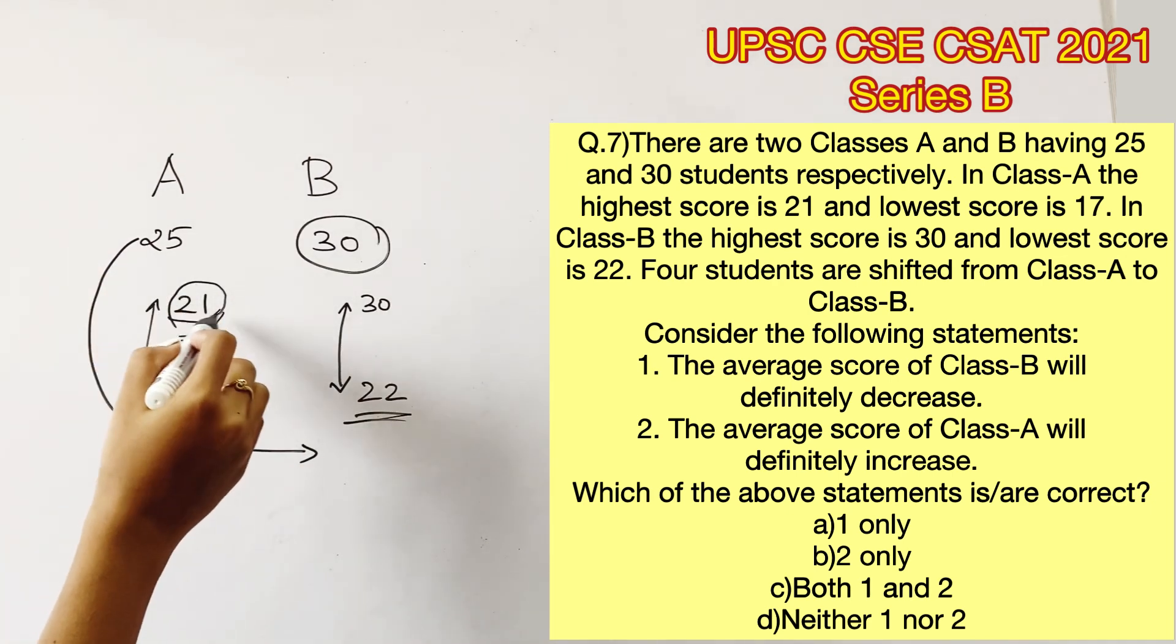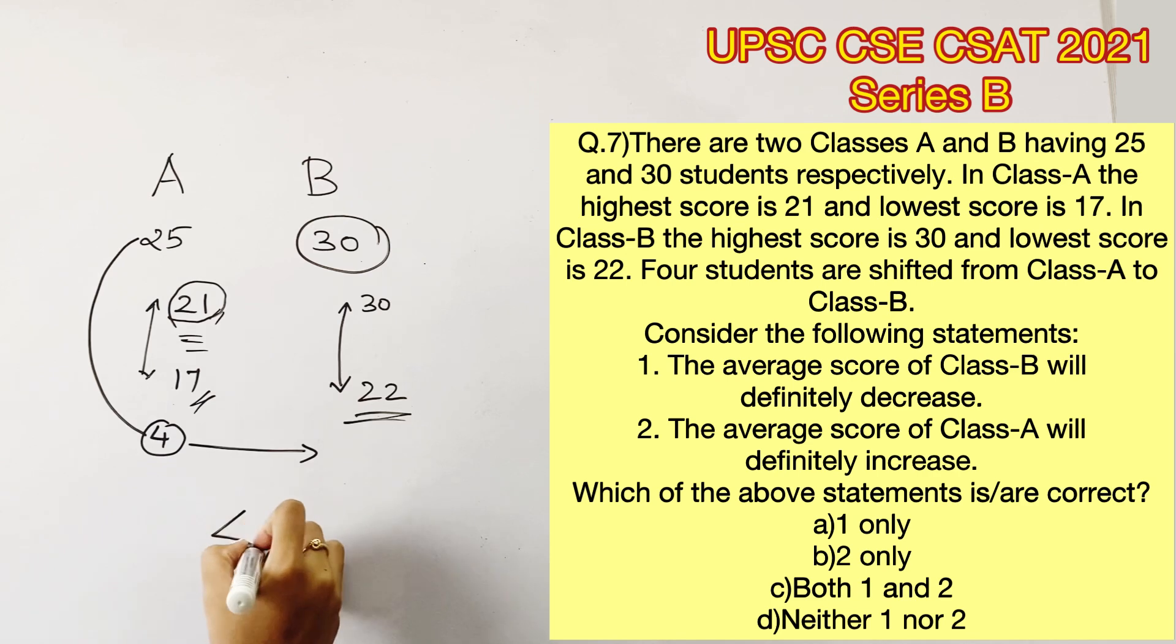The first statement says the average score of class B will definitely decrease. When you add a new term to an old average and the new term tends to be lesser than the old average or the old terms, the outcome of the old average will definitely decrease because you are adding a lesser term to the set.